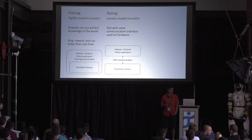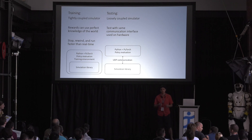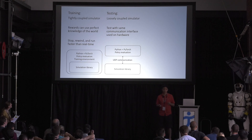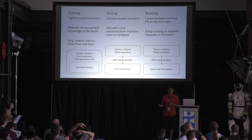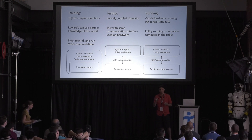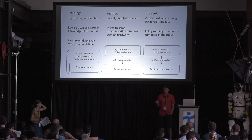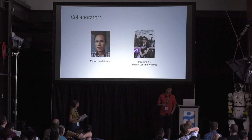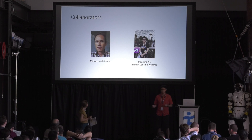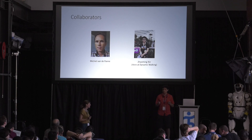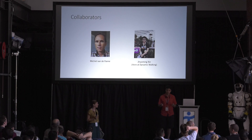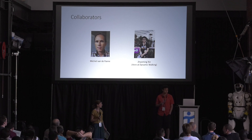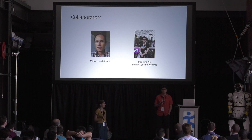We now have a setup that allows us to train policies using a tightly coupled simulator where things like foot forces and the global position of the robot are available for use in reward functions. Then test them on a loosely coupled simulator that basically just mimics the real-time system at the communication level. Once we have that working, we can just throw it on the robot by changing the IP address that it's sending commands to. If you go to the link on the postcard that Jonathan was distributing earlier, you can download most of this setup minus the physical robot. We've also been collaborating with Michael Van de Pan at the University of British Columbia and his student Zhao Ming, who's here at the conference. If you'd like to see footage of a learned walking controller for Cassie that actually functions correctly, watch his video later in this session and check out his poster. Now that all the infrastructure is in place, we're looking forward to incorporating aspects of their learning process and testing some of their policies on the robot in the very near future.